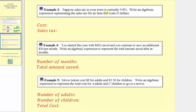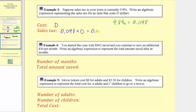Example three: suppose sales tax in your town is currently nine point eight percent. Write an algebraic expression representing the sales tax for an item that costs d dollars. We'll use the variable d for the cost of the item. The sales tax will be nine point eight percent of d. To find the percent of a number, we convert the percent to a decimal and multiply. Nine point eight percent as a decimal would be zero point zero nine eight — to convert, we remove the percent sign and divide by one hundred, or move the decimal point two places to the left. Which means the sales tax for an item that costs d dollars would be zero point zero nine eight times d, written as zero point zero nine eight d.